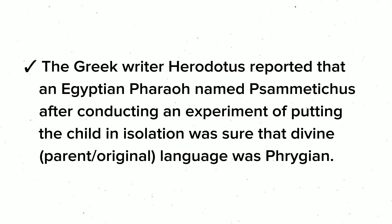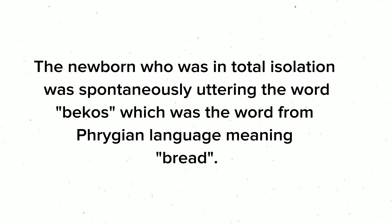The Greek writer Herodotus reported that an Egyptian pharaoh named Psammetichus, after conducting an experiment of putting a child in isolation, was sure that the divine original parent language was Phrygian. The newborn, who was in total isolation, was spontaneously uttering the word 'Baikos,' which was a word from the Phrygian language meaning bread.